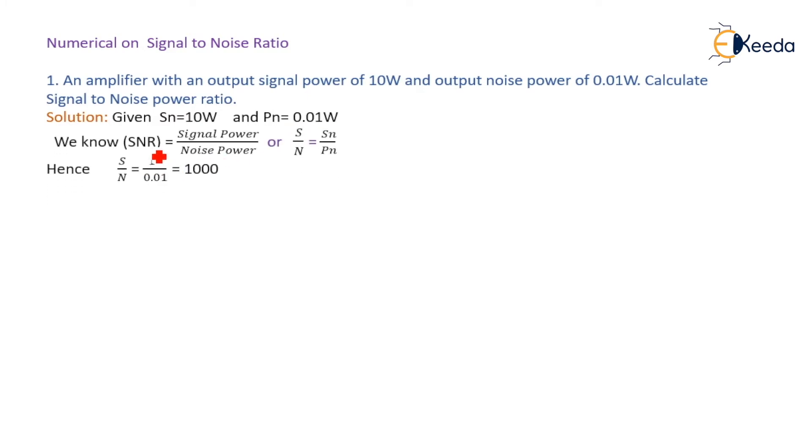We know the formula for signal to noise ratio is signal power divided by noise power, or S divided by N equal to Sn divided by Pn. Hence, putting the values, S by N equal to 10 divided by 0.01 equal to 1000.